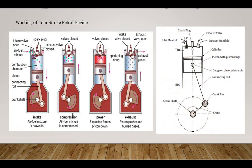Next is the compression stroke. During this stroke, both inlet and exhaust valves are closed, and the piston moves from bottom dead center to top dead center. The charge which entered during the suction stroke is compressed up to the clearance volume. During this process, the pressure and temperature of the mixture rise. Just before the end of the compression stroke, the mixture is ignited with the help of the spark plug. Due to the release of chemical energy of the fuel, the pressure and temperature of the mixture further rise.